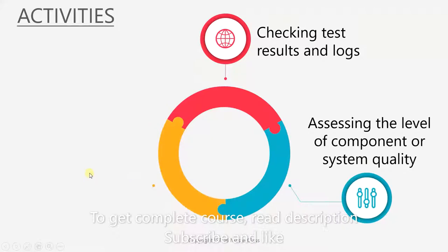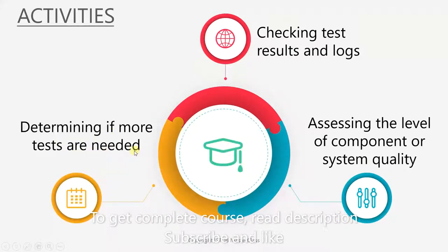The third one is determining if more test cases are needed. If the quality standards have not been maintained, then we have to find out why. Do we need more test cases? So these are the activities under test monitoring and control.